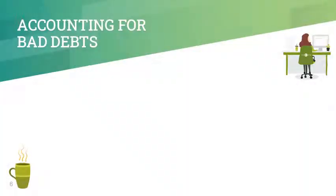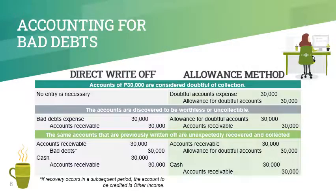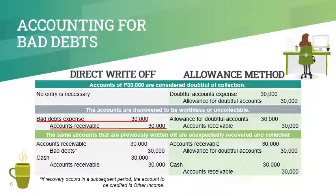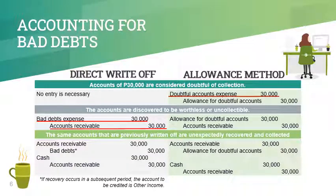There are two methods of accounting for bad debts: direct write-off method and allowance method. As we can observe from the sample illustration, the direct write-off method records bad debt loss only when accounts proved worthless or uncollectible. The method is called direct write-off because the recognition of bad debt loss involves writing off the related accounts receivable. When the accounts are only doubtful of collection, no entry is necessary. On the other hand, the allowance method recognizes bad debt loss when accounts become doubtful of collection, resulting in an earlier recognition of bad debt loss than the direct write-off method. It is referred to as the allowance method because it involves setting up an allowance for doubtful accounts.